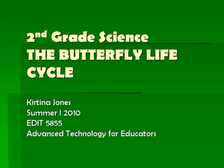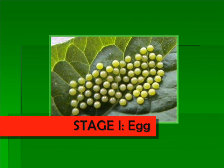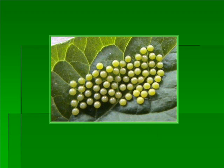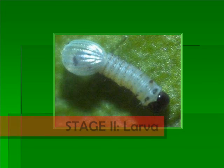The cycle of stages is called metamorphosis. Let's learn about the butterfly. Stage one is the egg stage. The egg is the first stage in the butterfly life cycle. Butterfly eggs are very small and round. Adult females lay their eggs on or near the plants that will later become caterpillar food.